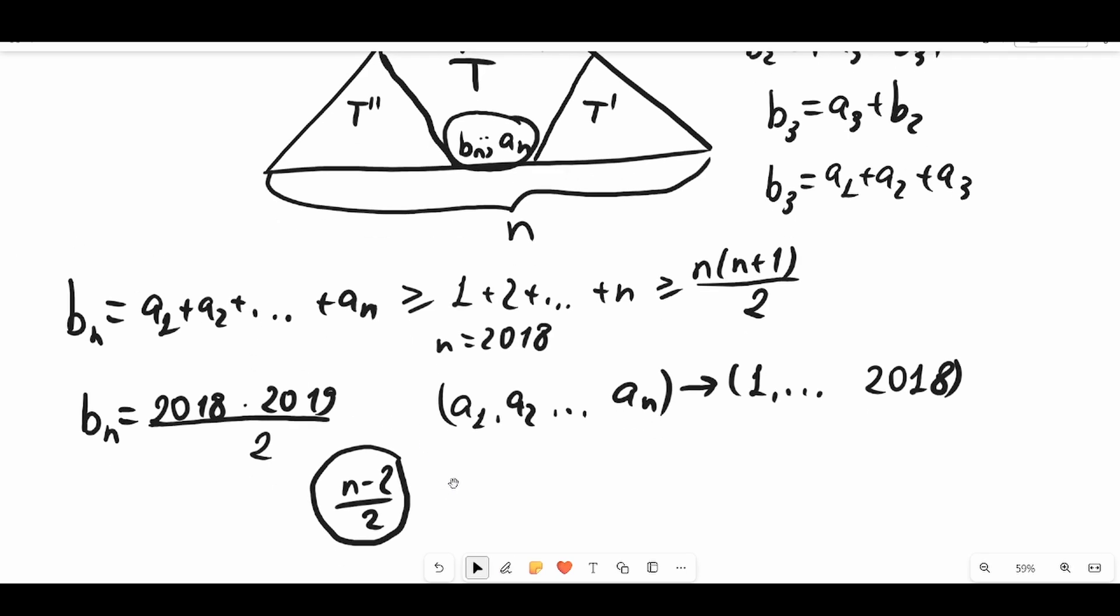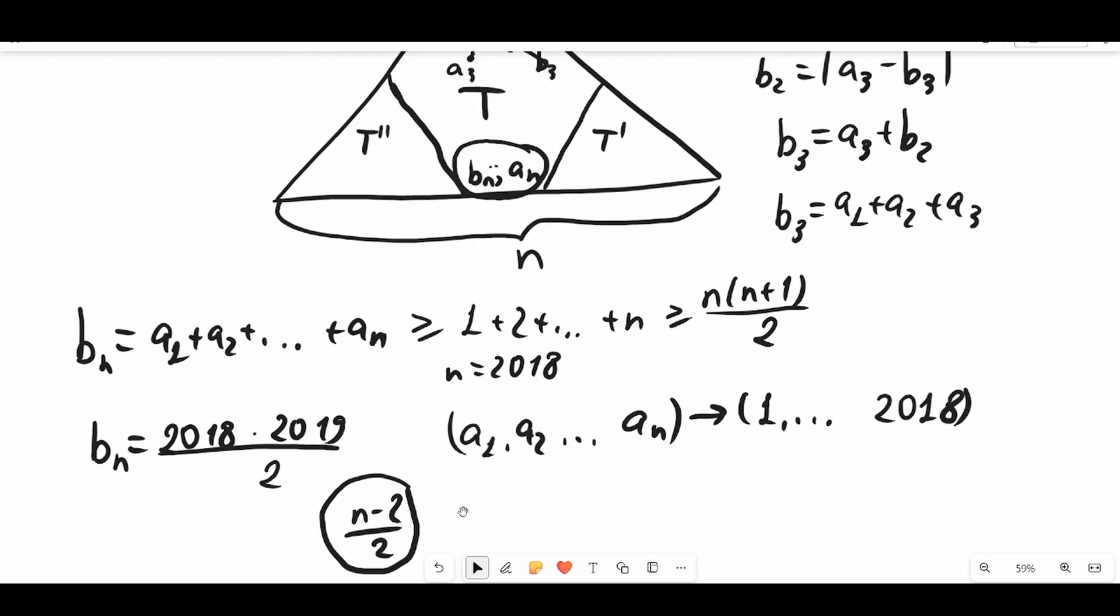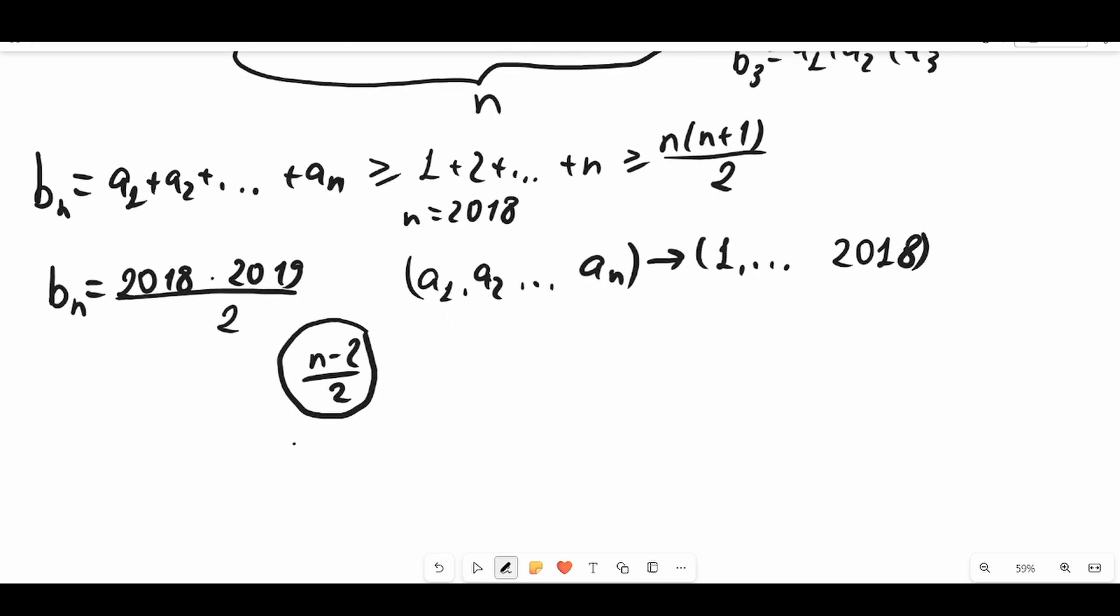How can we use this fact? Let's assume that the size of T2 prime is more than (n-2) over 2. And do the same process here: call this cn. cn must equal d1 plus d2 plus all the way up to dt, where t is the size of T2 prime. The size of T2 prime equals t, and t is greater or equal to (n-2) over 2.